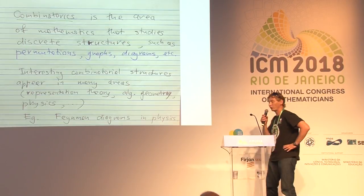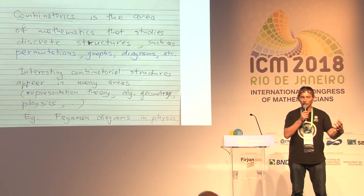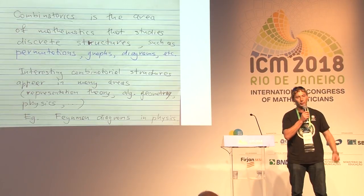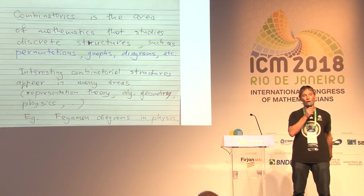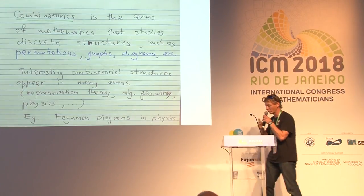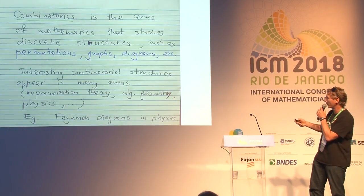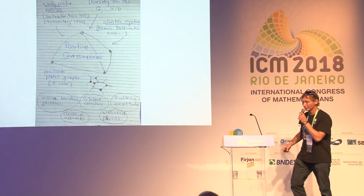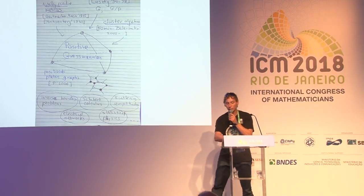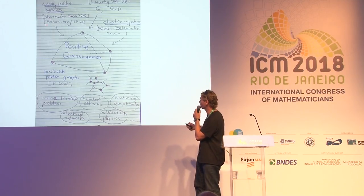For example, in physics, there are Feynman diagrams — graphs that describe interactions between particles. These are discrete objects that lie in the core of fundamental laws of nature. The main object I'm going to talk about today is the positive Grassmannian.